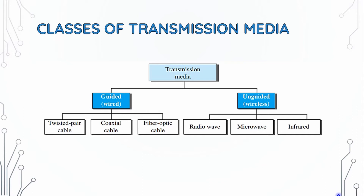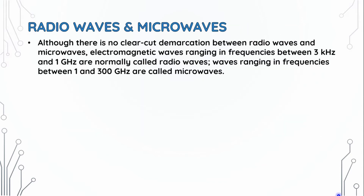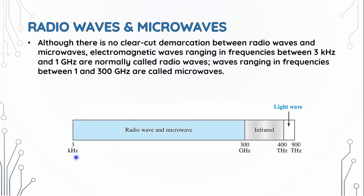In this video, we will talk about radio waves. The frequency range for radio waves is between 3 kHz to 1 GHz, and the microwave range is 1 GHz to 300 GHz. The infrared range is 300 GHz to 400 THz.